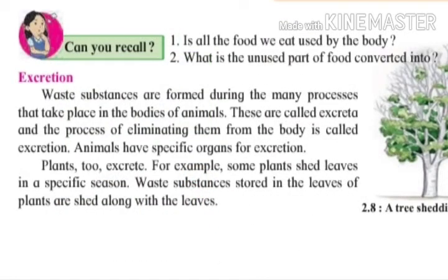The next characteristic is excretion, arthas utsarjan. Waste substances are formed during the many processes that take place in the body of animals. Pranen cha shira madhe vegvaglhya kriya chalat astat, aani tiyaatun nirupayogi taakau padartha tiyar hotat. These are called excreta, and the process of eliminating them from the body is called excretion, arthat utsarjan.